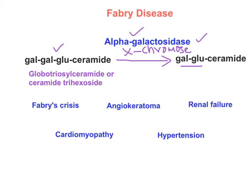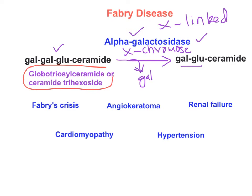Since the alpha-galactosidase enzyme gene is on the X chromosome, Fabry disease is an X-linked recessive condition. Deficiency of alpha-galactosidase means that globoside (ceramide-glucose-galactose-galactose) cannot be converted, so one galactose is not released. This leads to accumulation of a compound called globotriacylceramide, also called ceramide trihexoside, since ceramide is attached to three hexoses: glucose, galactose, and galactose.